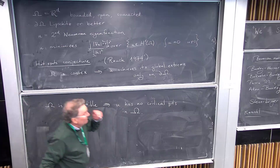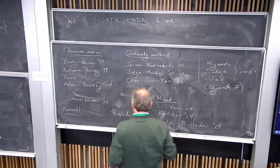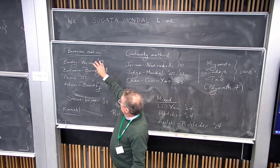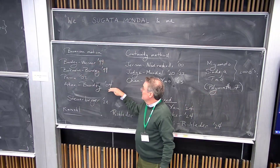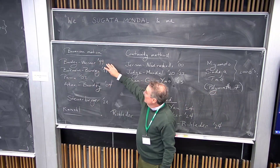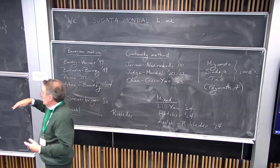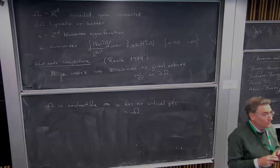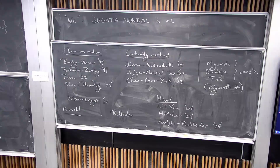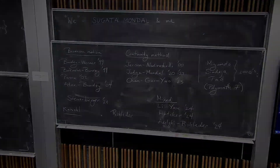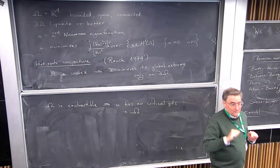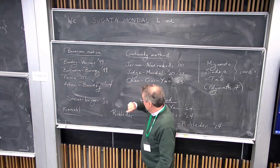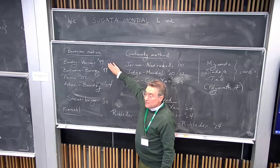Let me group the results by context. The conjecture was made in 1974, and about 25 years later there was significant progress. The original conjecture didn't have the contractibility or simple-connectedness condition, and Burdzy and Werner found a multiply connected domain for which the conjecture was false. Burdzy later found an annular domain that was also a counterexample. So it was decided that simple connectedness should be added.